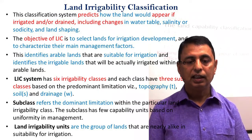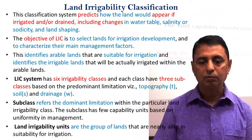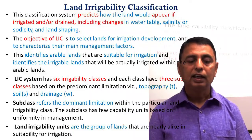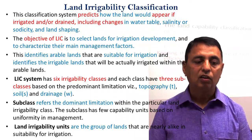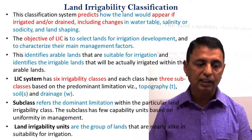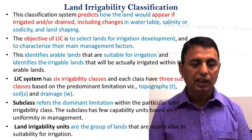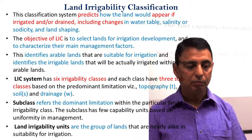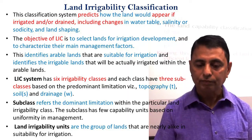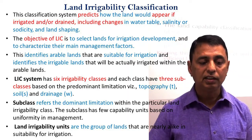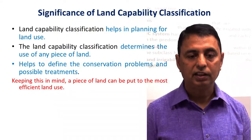The significance of land capability classification is that it helps in planning for land use, determines the most appropriate use of any piece of land, and helps to define conservation problems and possible treatments. Keeping this in mind, a piece of land can be put to the most efficient land use. A similar concept is land irrigability classification.